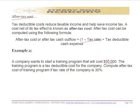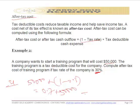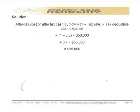The after-tax cost of the training can be computed after applying 30% tax. The taxable cost is $50,000 multiplied by (1 − 0.30), which is 0.70. So: $50,000 × 0.70 = $35,000. That is what the company will actually pay. This is how income tax affects cash flow in capital budgeting.